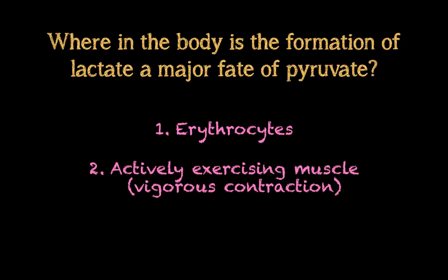Another place would be actively exercising muscle. If you just put 'muscle' alone, you'll get in trouble, because under normal circumstances muscle receives enough oxygen for pyruvate to enter the TCA cycle. It's under situations of active exercise — vigorous contraction — where not enough oxygen reaches the muscle, and therefore pyruvate is converted to lactate due to the anaerobic conditions being set up.